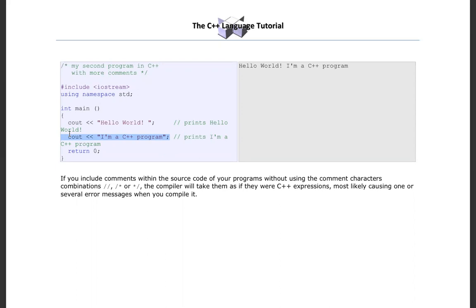This is how comments are done in C++. Try to comment your code — C++ is very complex, so when a programmer takes your code you need to explain it to them. Unlike HTML which can sometimes be self-explanatory, C++ can get confusing without comments, so you have to add comments to make your program clear and understandable.